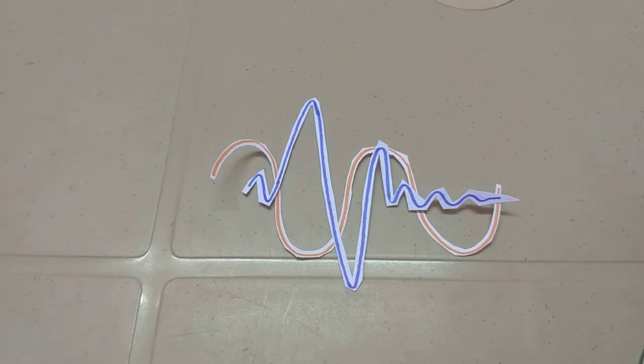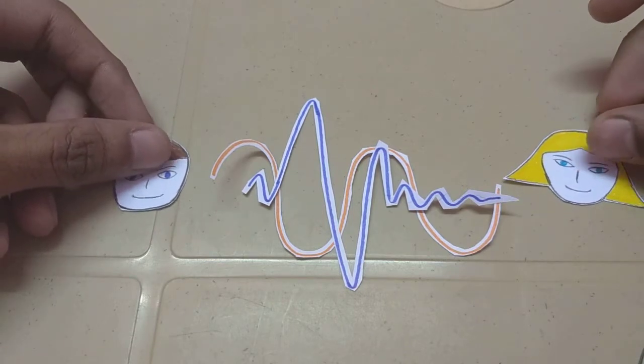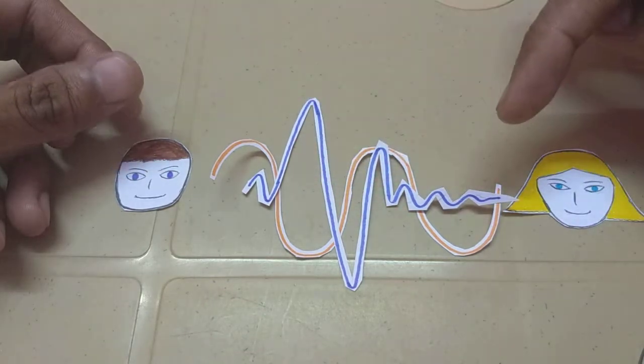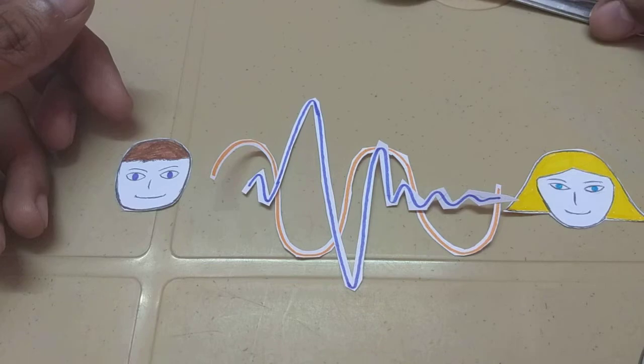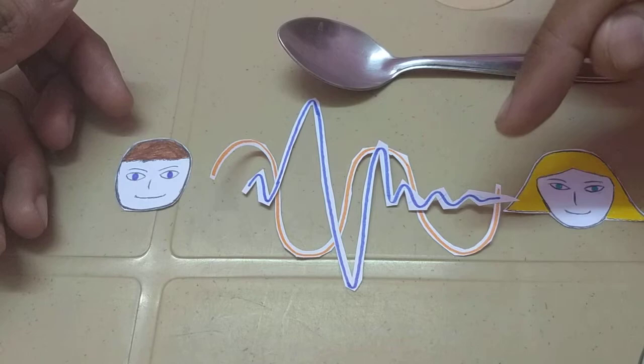Let me demonstrate a classic example. Consider we are in a restaurant and Tom and Mary are sitting and talking. Their speech can be approximated by a steady state noise signal. Now let's say the waiter drops a spoon. The dropping of a spoon can be approximated by a transient impulsive noise.